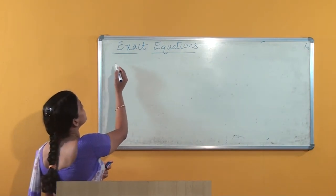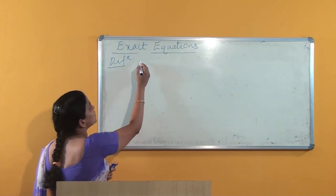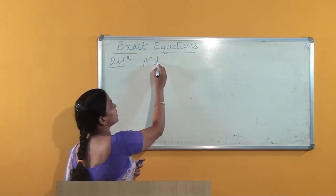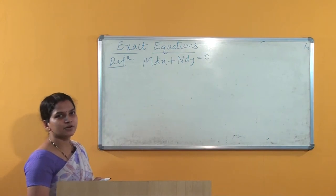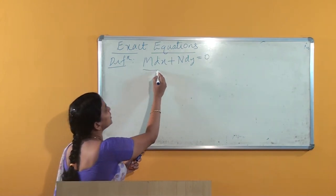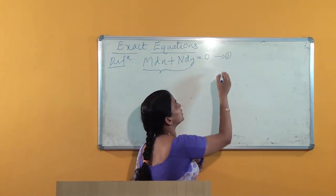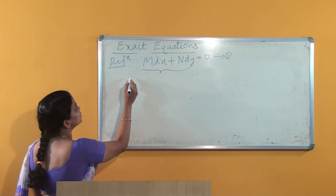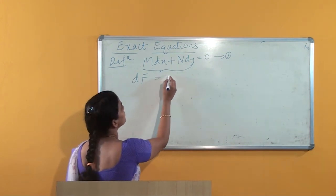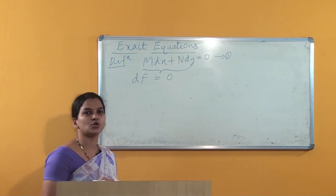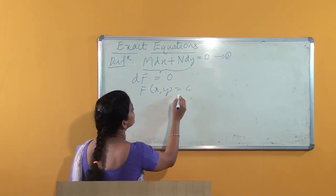First we will see the definition of an exact equation. Consider the first order differential equation of the form Mdx + Ndy = 0. Suppose there exists a function f(x,y) whose total derivative is Mdx + Ndy. Then this differential equation is called an exact equation. If this is an exact equation, then it can be written as df = 0, and integrating we get f(x,y) = c.